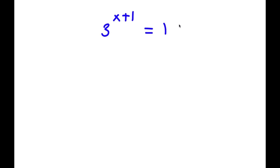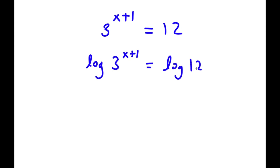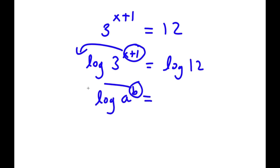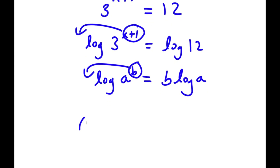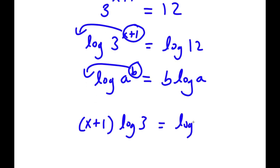In this problem, I have 3 to the power of x plus 1 is equal to 12. To solve this, I'm going to first start by taking the log on both sides. So now I have log of 3 to the power of x plus 1 is equal to log 12. I'm going to move x plus 1 to the front — since log a to the power of b equals b times log a — so I have x plus 1 times log 3 is equal to log 12.